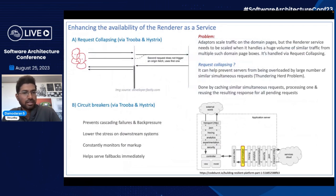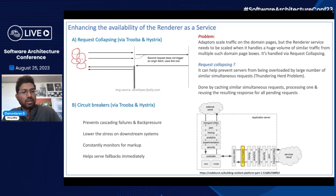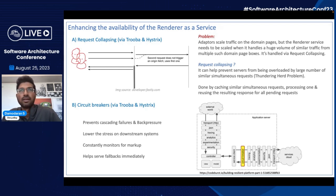We also have circuit breakers in place — there was actually a session about circuit breakers at this conference. We use circuit breakers because when a downstream system is already strained, you don't want to fire more and more calls without giving it an opportunity to recover — that's a bad pattern. Circuit breakers help alleviate back pressure on downstream servers, prevent cascading failures, and lower stress on downstream systems. The app monitor monitors the downstream service for markdowns; if it sees a markdown, it opens the circuit and instead of making the service call, triggers serving of fallbacks immediately so there's no delay in the response. Behind the scenes, it keeps monitoring at regular intervals. If the service comes back up, it closes the circuit and continues making calls.